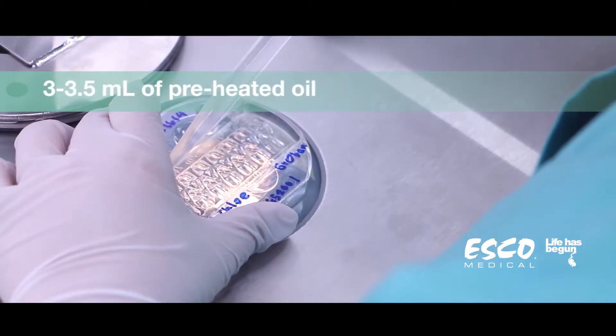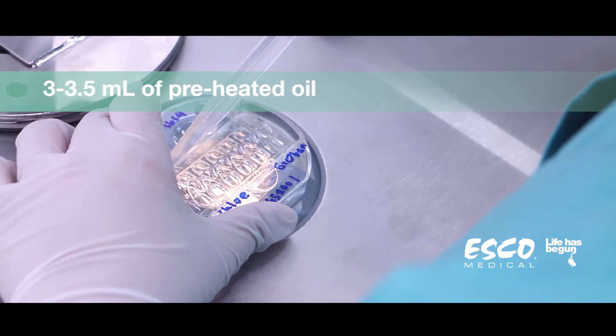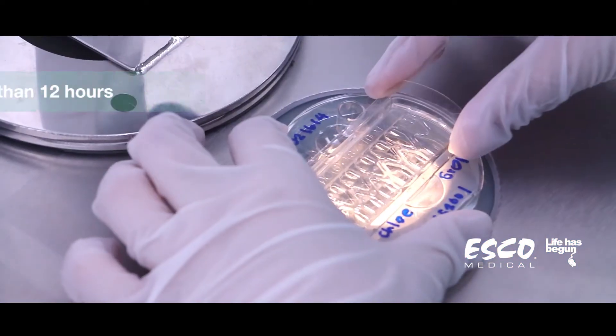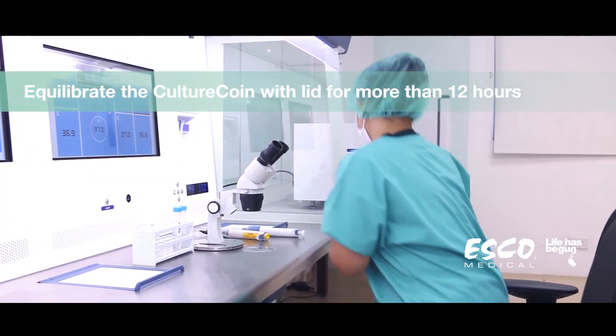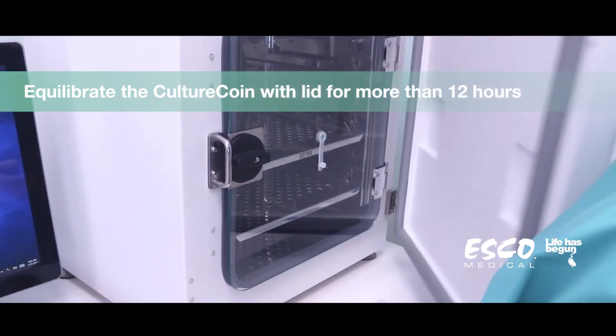Then cover the media with 3 to 3.5 ml of preheated oil. Put the culture coin with the lid inside an incubator and leave it for more than 12 hours for equilibration.